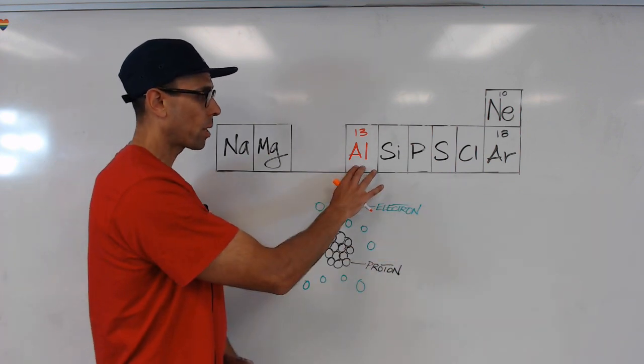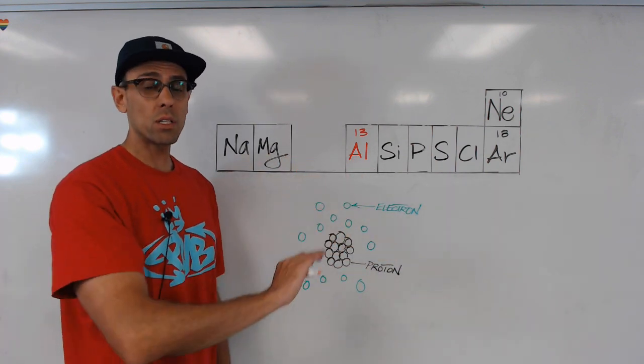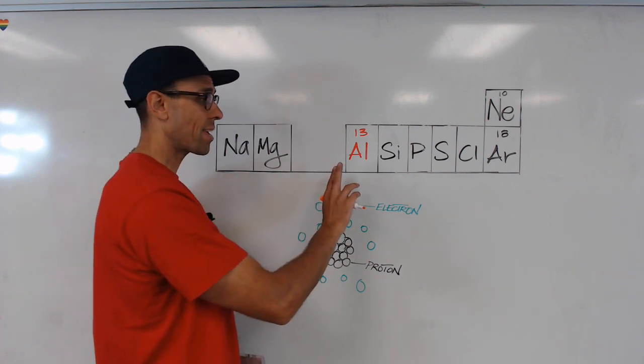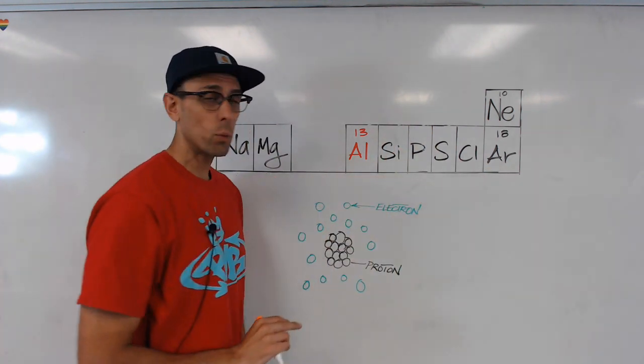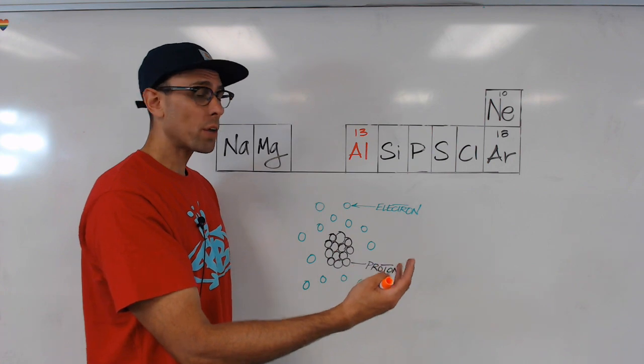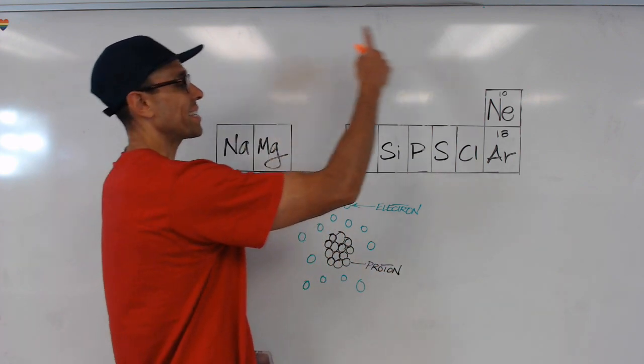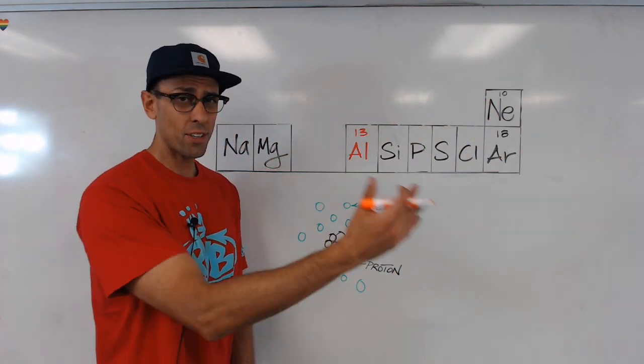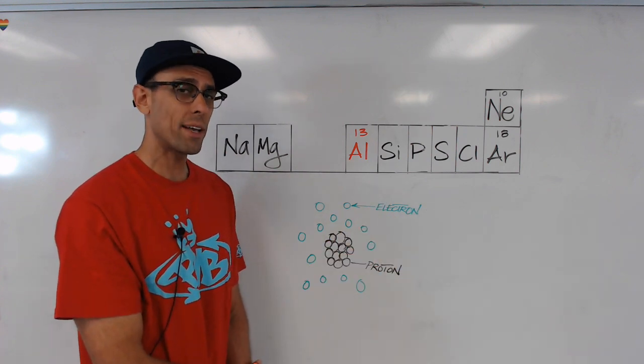Now, when we look at aluminum, we know that we have two choices. Aluminum is going to either want to be like the noble gas in front of it, which would be argon, or the noble gas behind it in the previous row, which is neon. And so, we've got to figure out which of those two makes more sense.